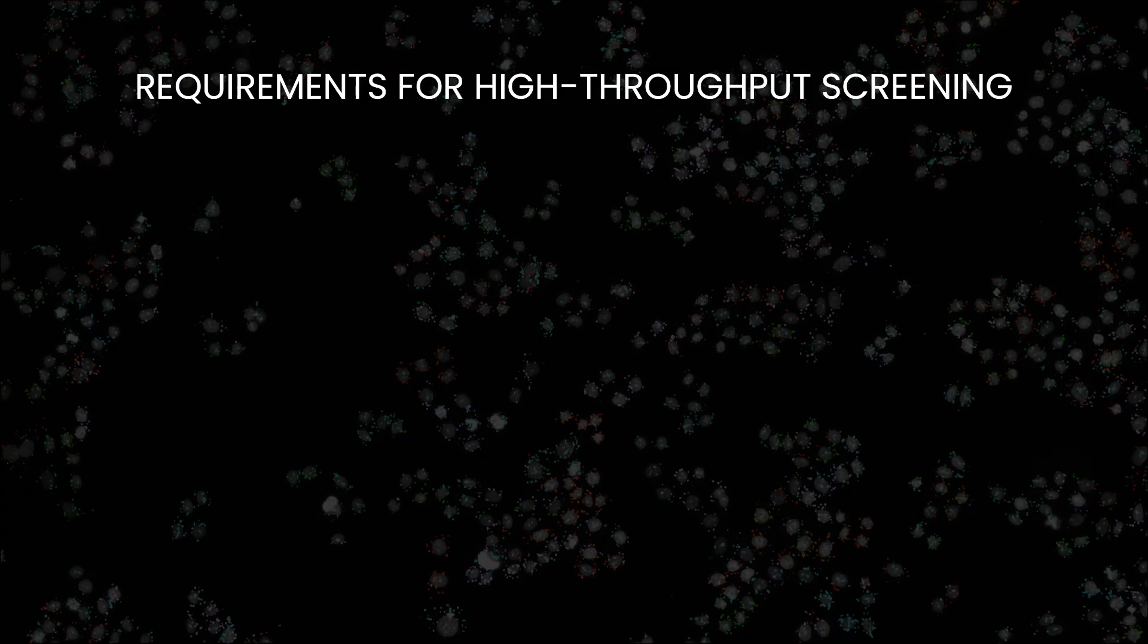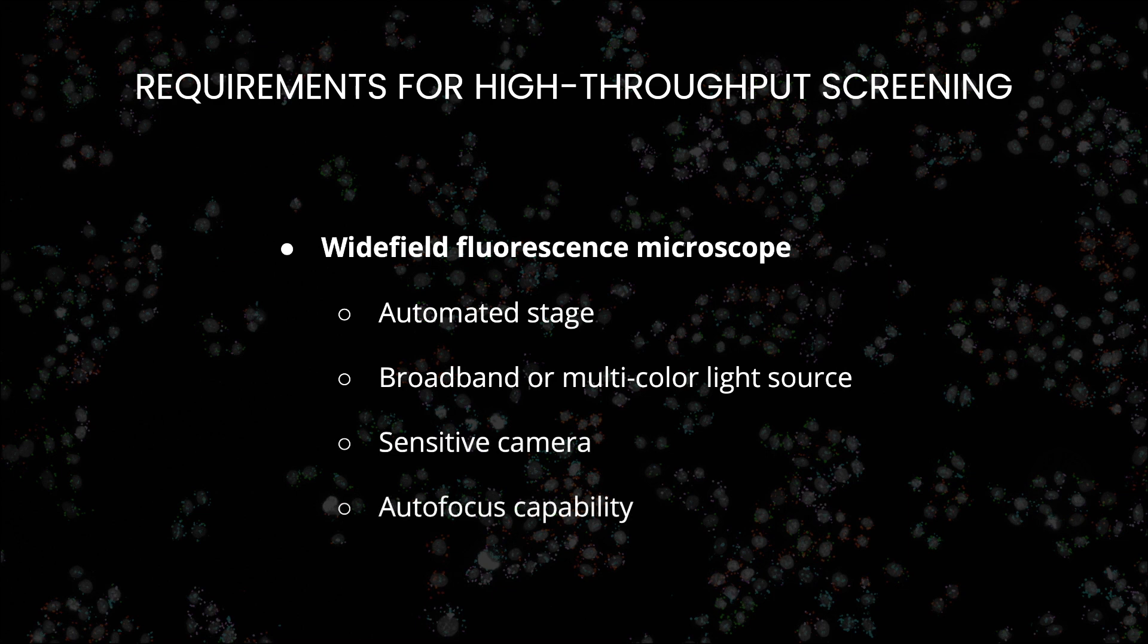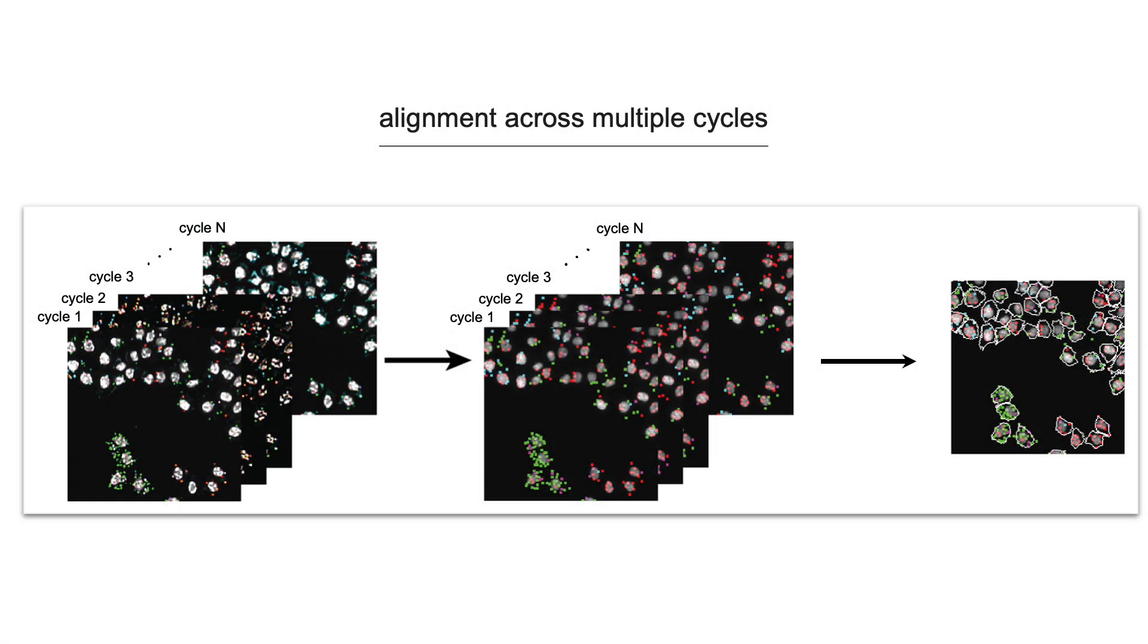Image-based readout of cellular phenotypes and genetic perturbations is performed on a wide-field fluorescence microscope customized for high-throughput screening with an automated stage, broadband or multi-color light source, sensitive camera, and autofocus capability. We provide microscope designs in the accompanying manuscript. Multiple cycles of sequencing are aligned to each other and to the phenotypic data by physically aligning the imaging fields across acquisitions and then refining computationally by image cross-correlation.